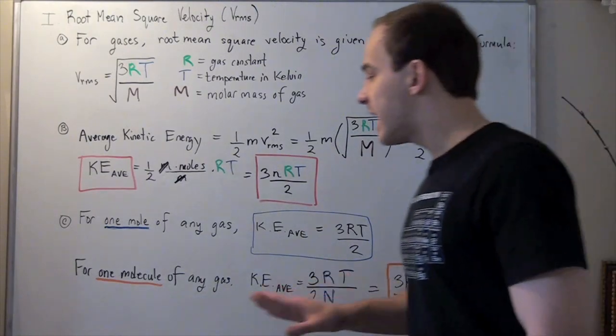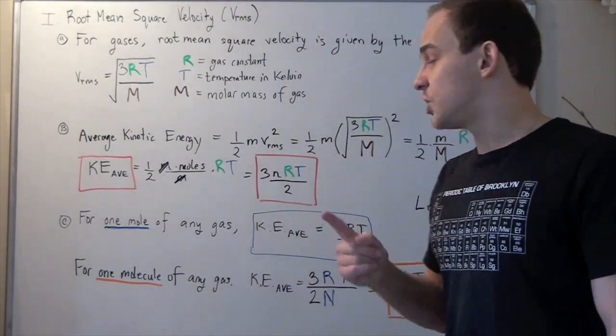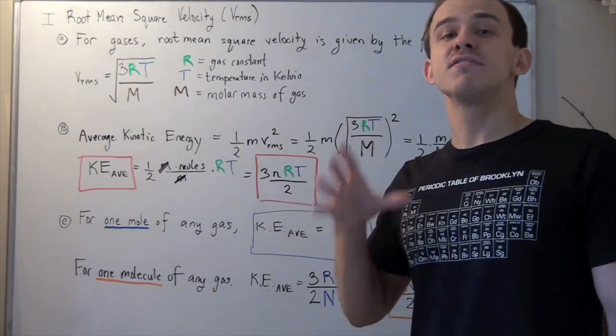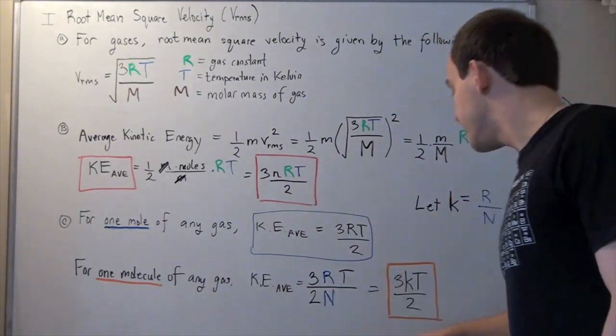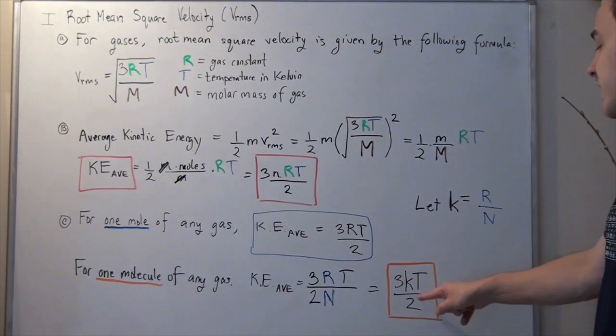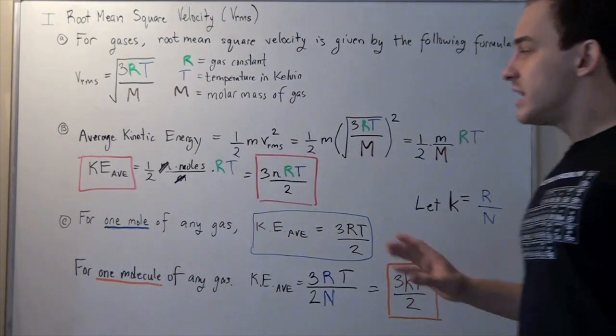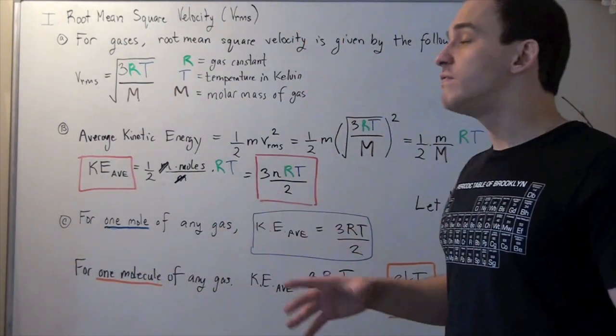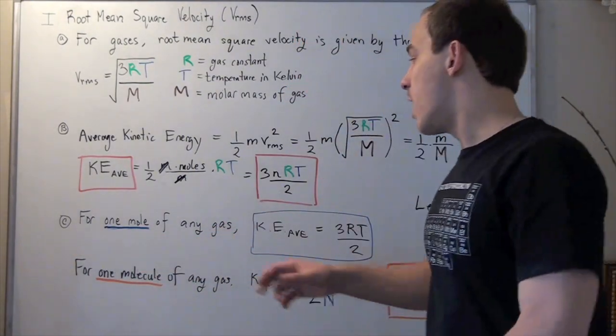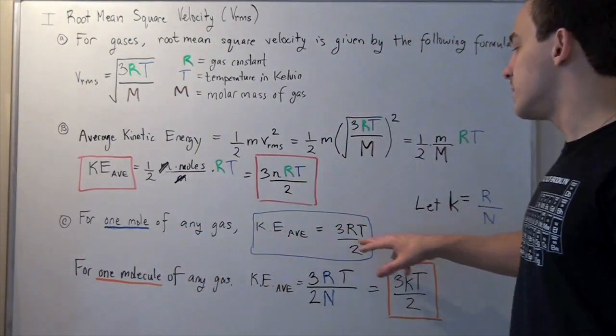So once again, for one molecule, a single molecule, to find the kinetic average of that molecule, we simply use this formula, where K is our Boltzmann constant. Now to find the average kinetic energy of a mole of molecules, we have to use this formula.